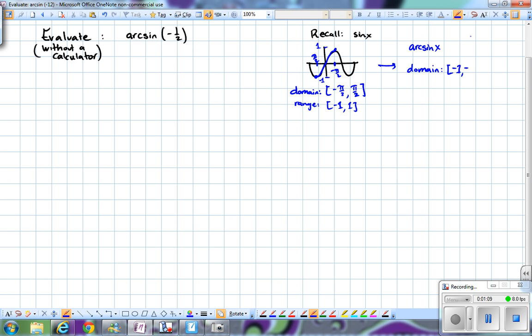This case is going to be from negative 1 to 1, and the range is going to be what the domain was, negative pi over 2 to pi over 2. This is just one of the properties for inverse functions.